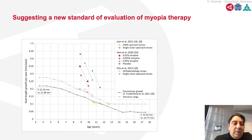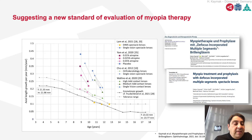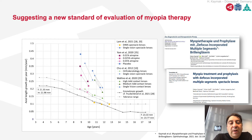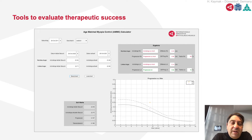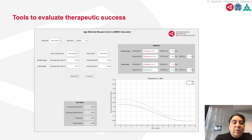When looking at study results that are now age-matched, we see a clear benefit of optical correction with DIMS lenses. We have the emmetropic eye growth reference, and we also see very good results with multifocal contact lenses, as well as the concentration-dependent effect of atropine. For daily evaluation, we now have our age-matched myopia control calculator — very easy to use: input axial length, age, and sex to get a therapy suggestion.